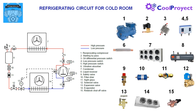In number 3 we have the oil differential pressure switch. This is a protection device that switches off the compressor if there is a lack of oil in the crankcase or if the oil pump is broken. This device works by differential pressure between suction and discharge of the pump. We have an oil pump normally in compressors of more than 10 horsepower.